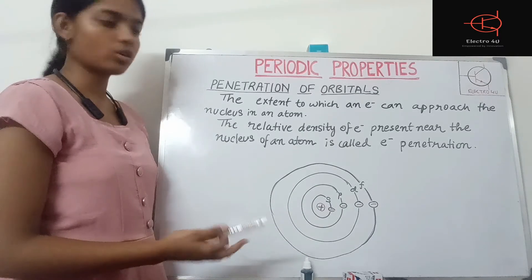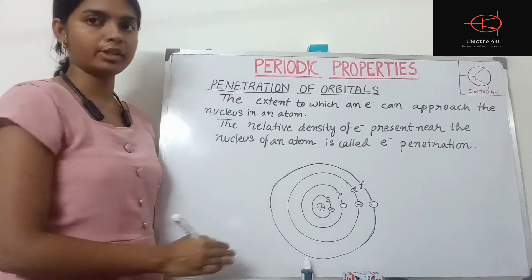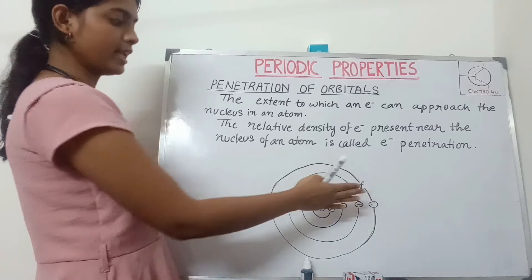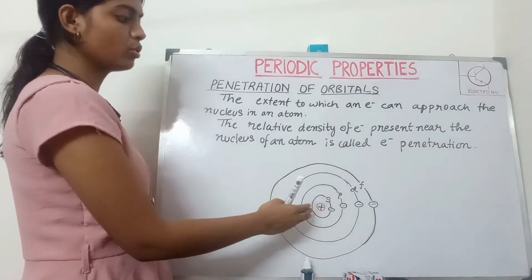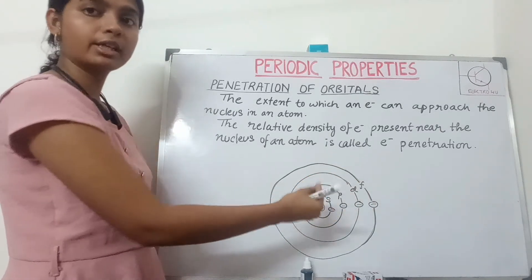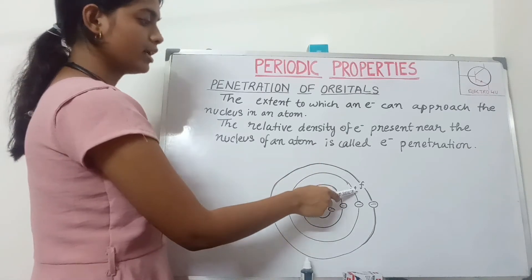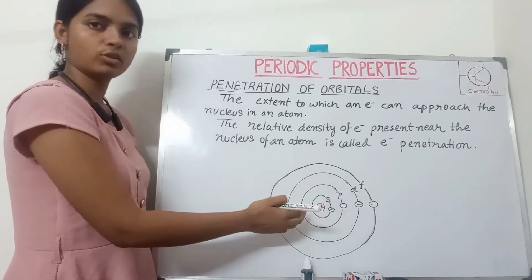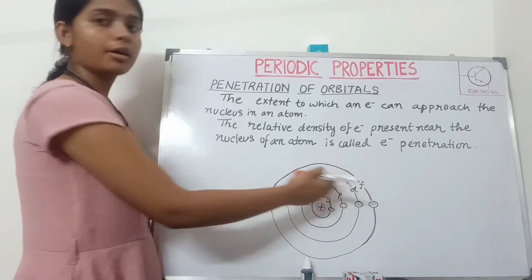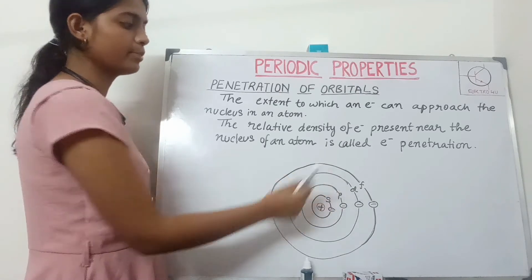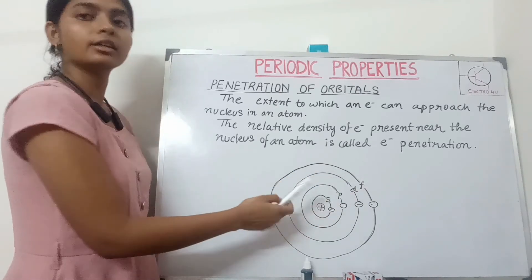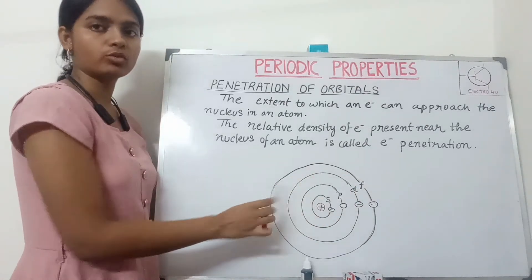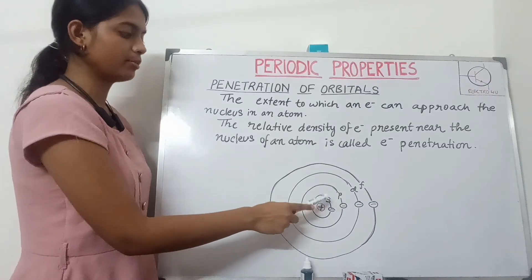The attraction force of the nucleus will be different on each and every orbital. S will approach the nucleus the most as compared to P, D, and F. P will approach the nucleus more than D and F but less than S. D will approach more than F but less than S and P. F will have the least approaching power towards the nucleus.